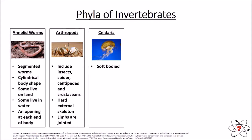Cnidaria are soft-bodied, they have stinging tentacles, and they live in water. The jellyfish is a prime example — it has a very soft body, it can sting, and obviously it lives in water. Cnidaria only have one opening to their body, so everything enters and exits through the same opening.